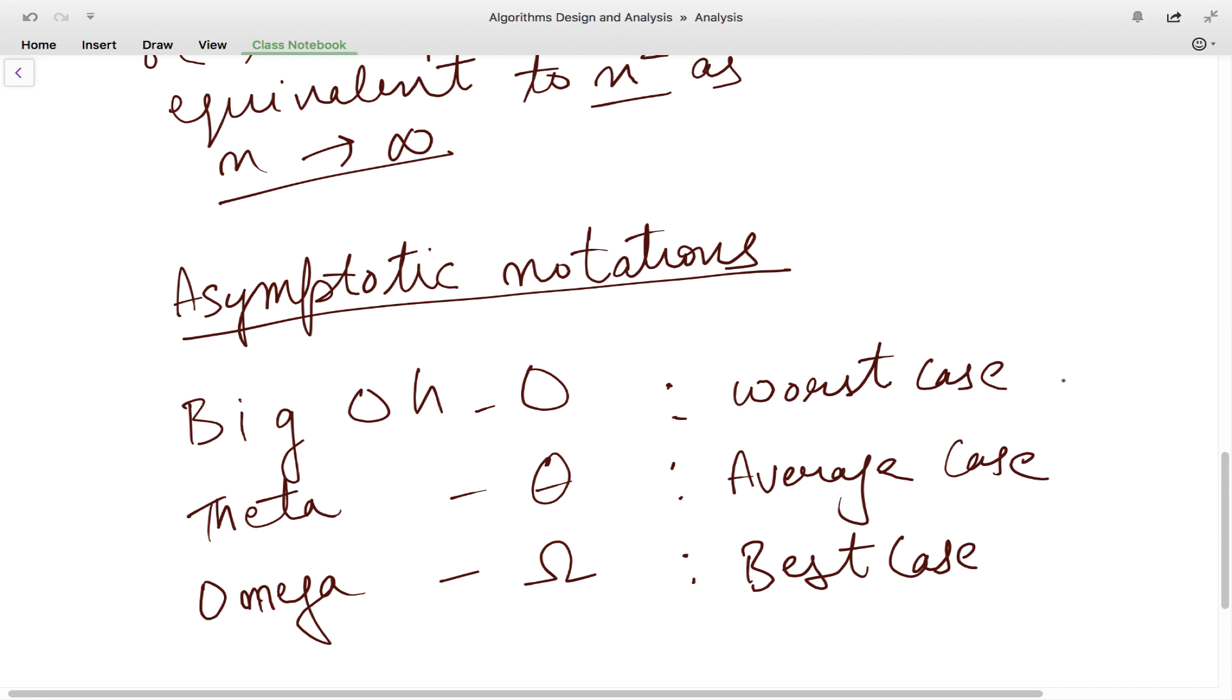Now you will be required to solve or to identify or find out the worst case, average case, and best case for different algorithms. And when we're talking about worst case, we are actually talking about the upper bound. When we're talking about best case, we are talking about lower bound. And the average case is known as the tight bound of those algorithms. So we need to understand now how to calculate upper bound, tight bound, and lower bound. And we will do it in our next video. Thank you very much.